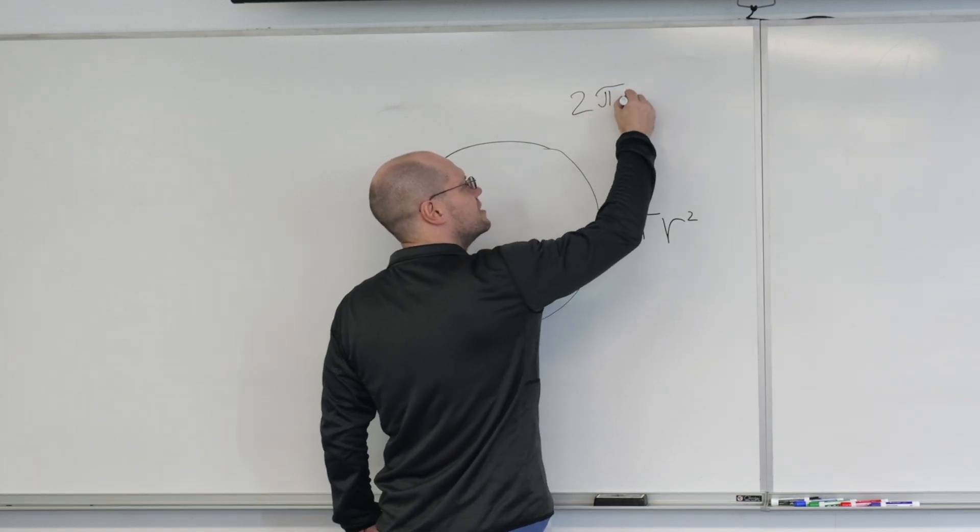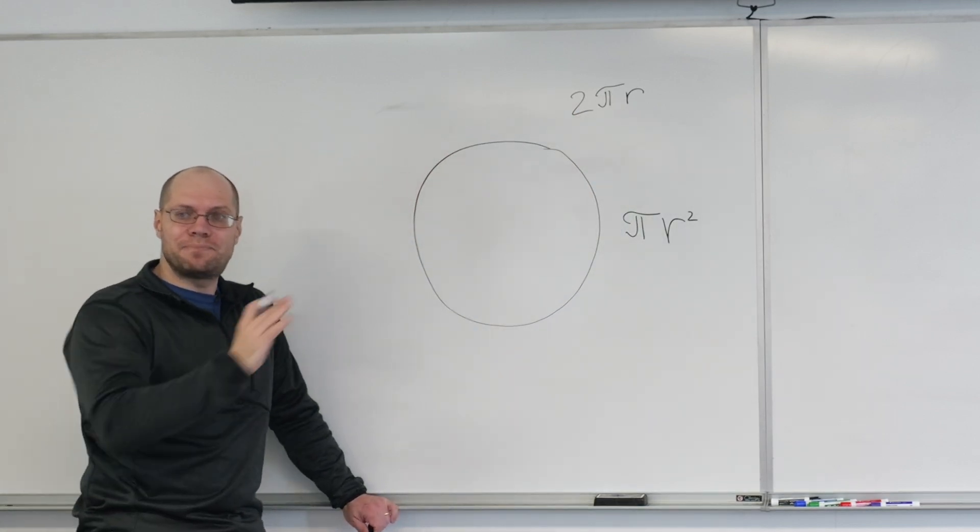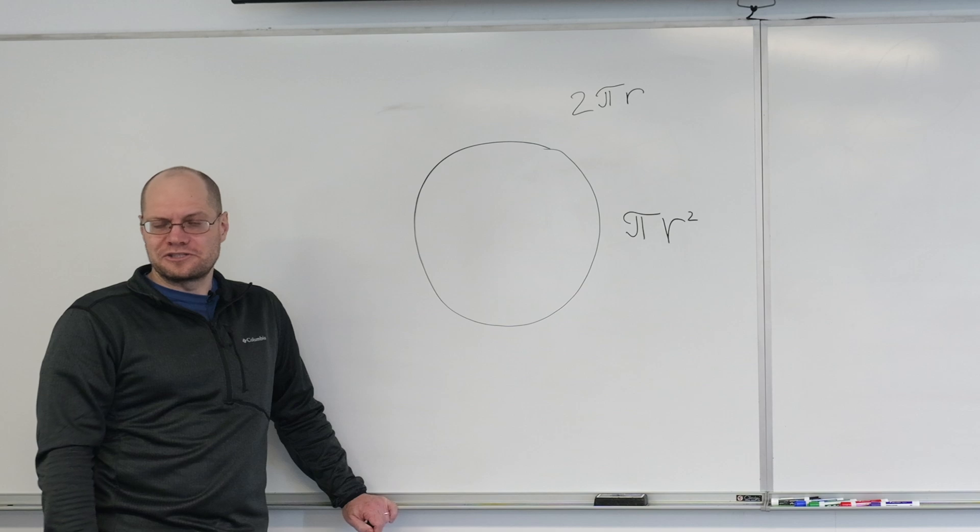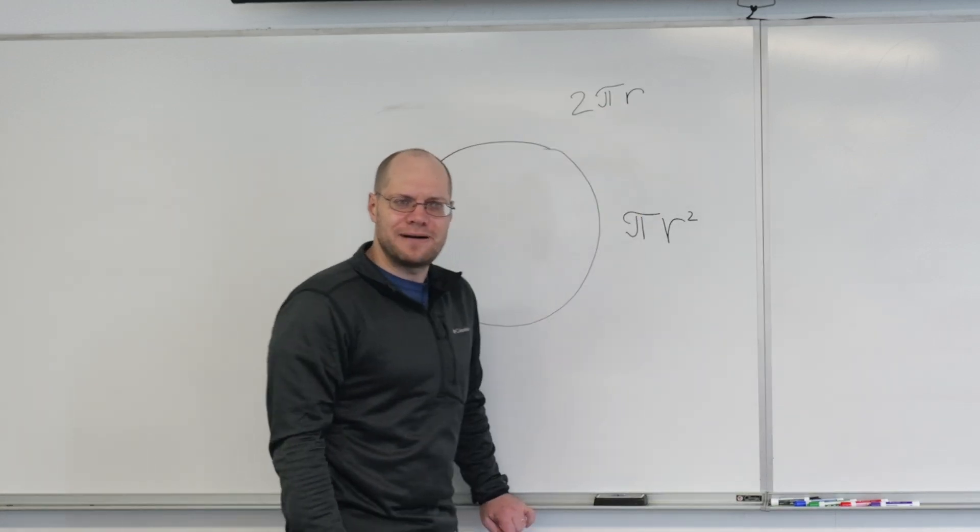And in that case, the circumference is 2πr, because 2r is the diameter. And we're calling π that coefficient of proportionality. We don't understand it, but we give it a name and so we feel better about it.